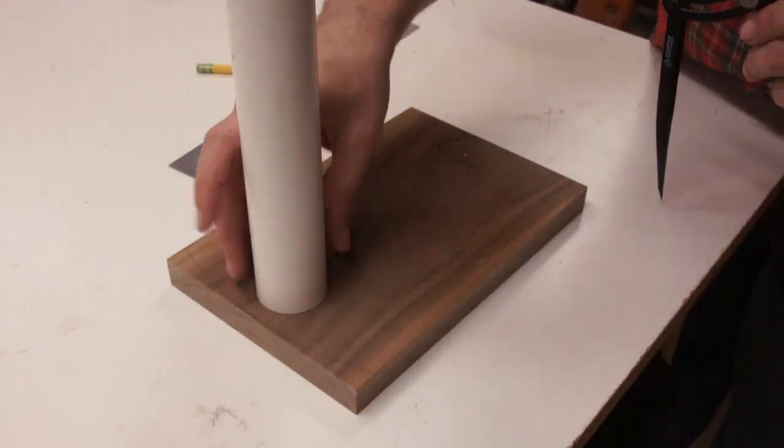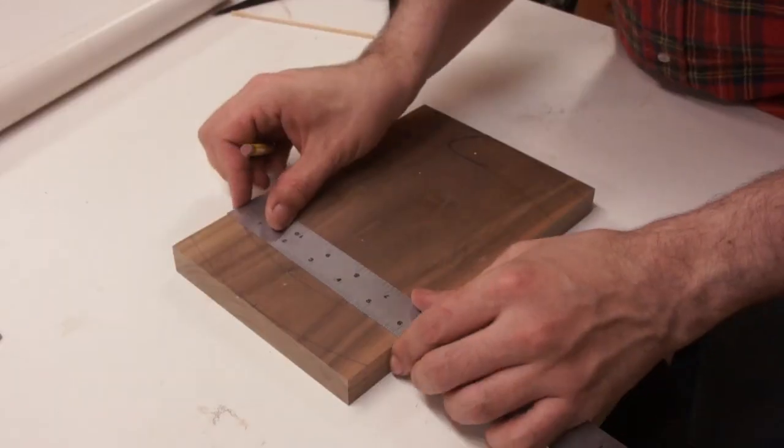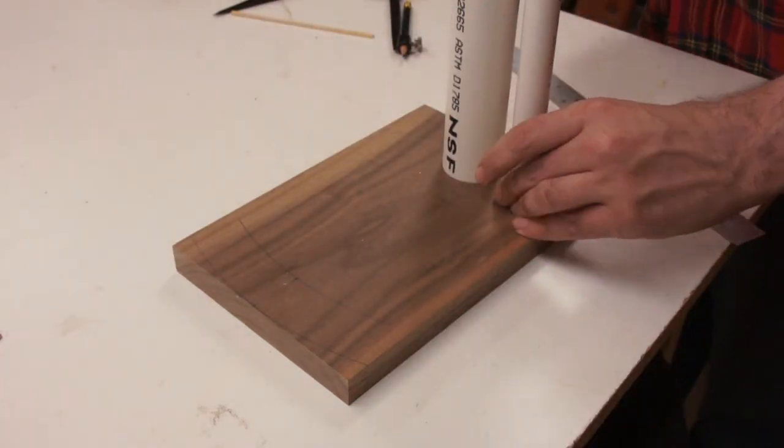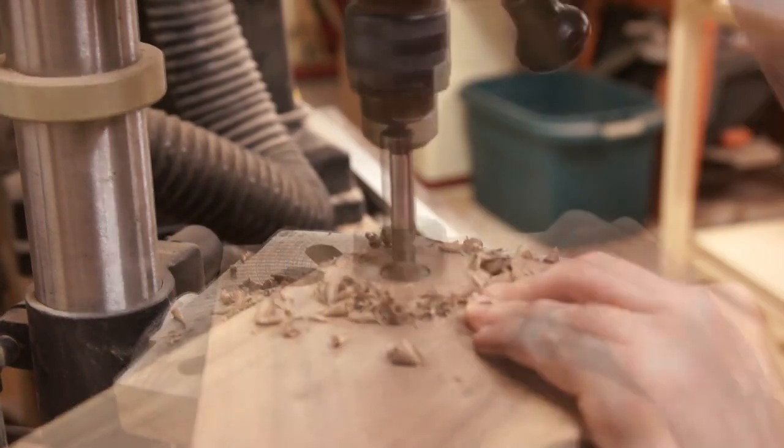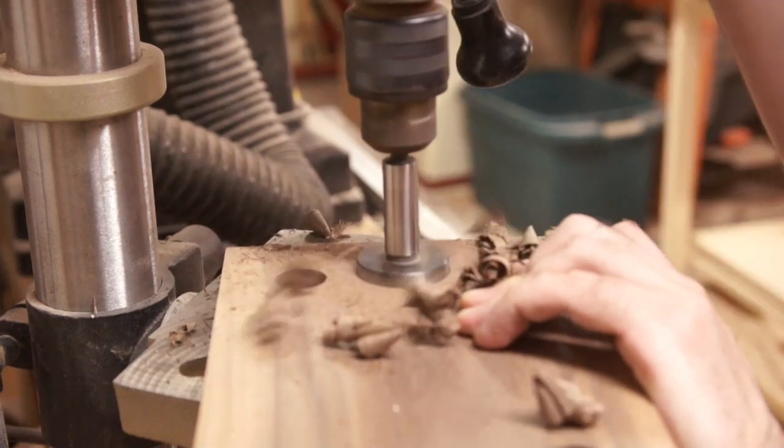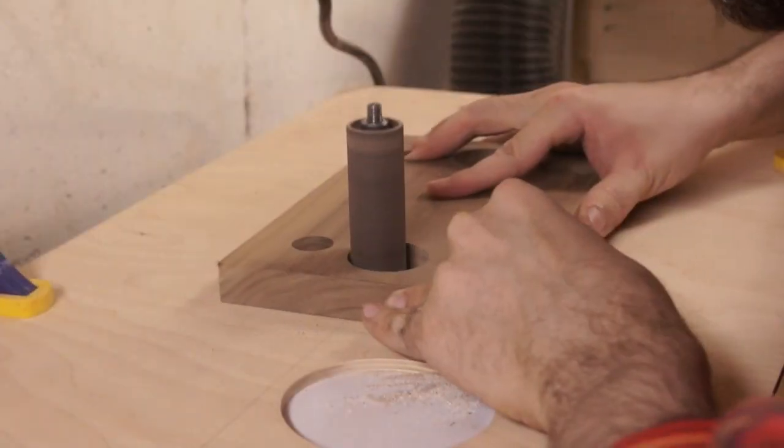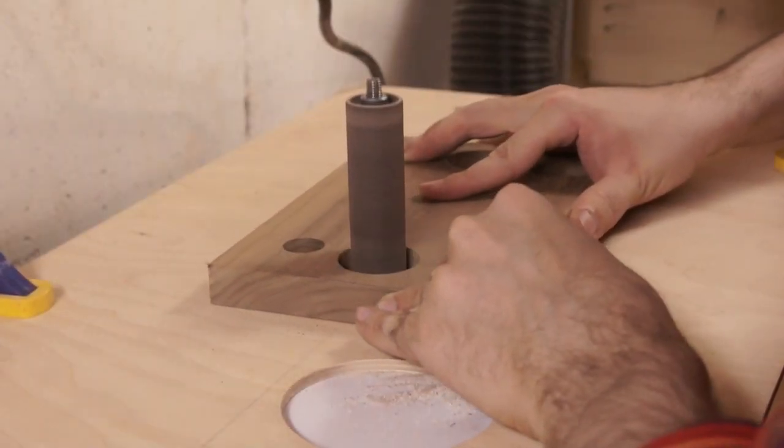So while the finish was drying, I could move on to making the base. And this time the inch and a quarter PVC was too tight of a fit for the holes, so I had to use the spindle sander to enlarge those a little bit.